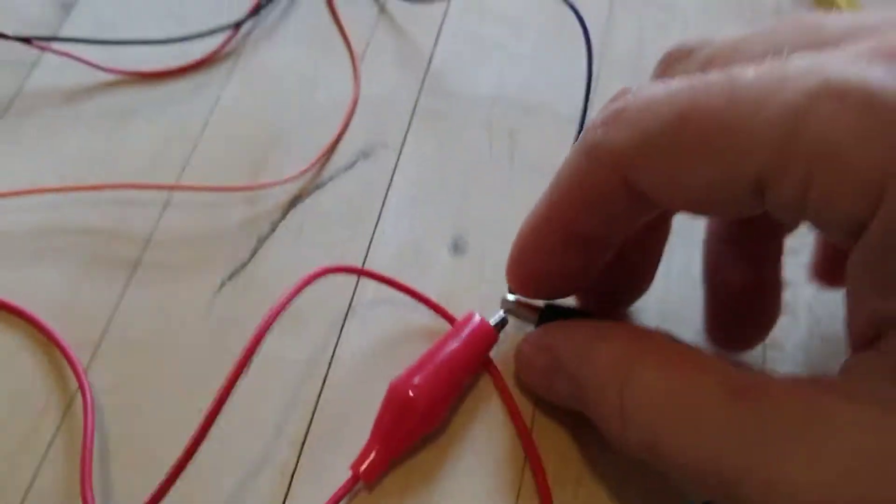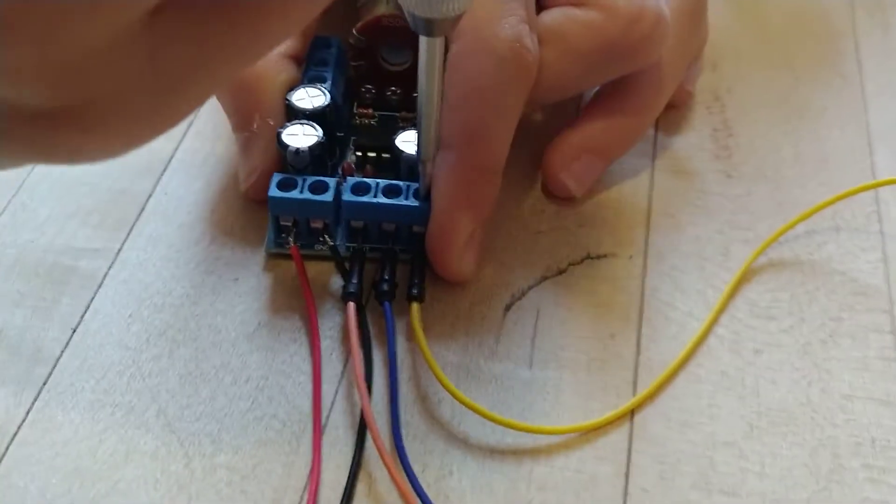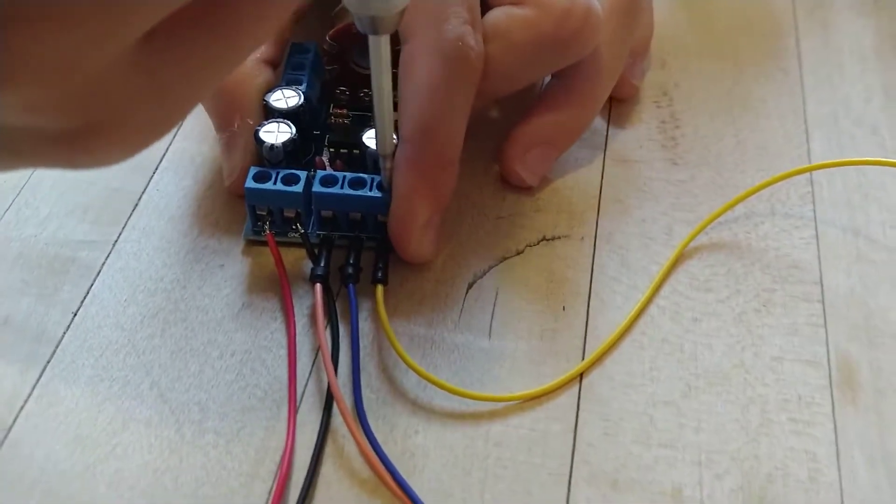And Daria has already connected this green alligator clip to this orange wire which is going to the left out terminal of our circuit board.